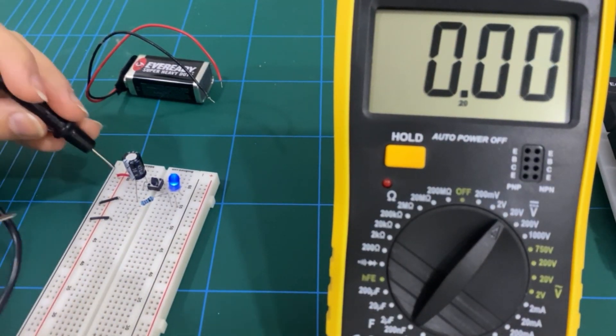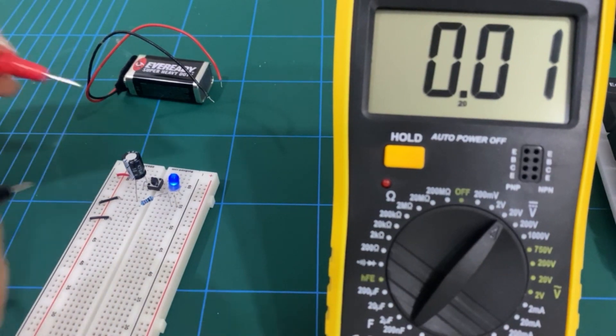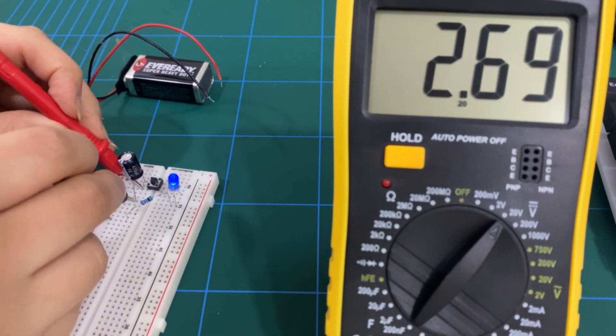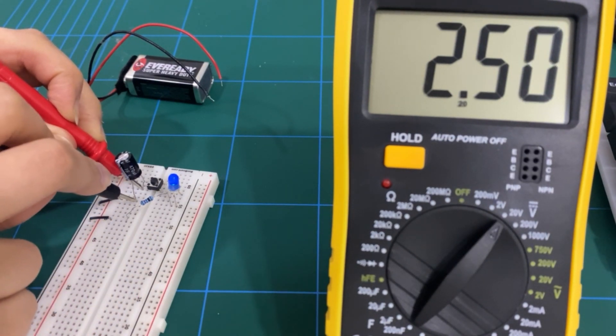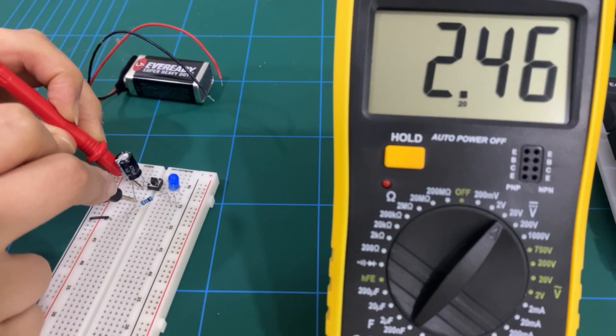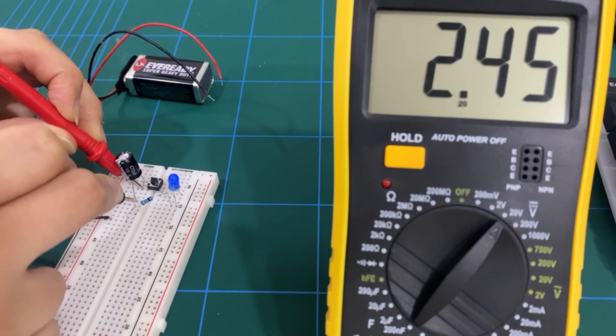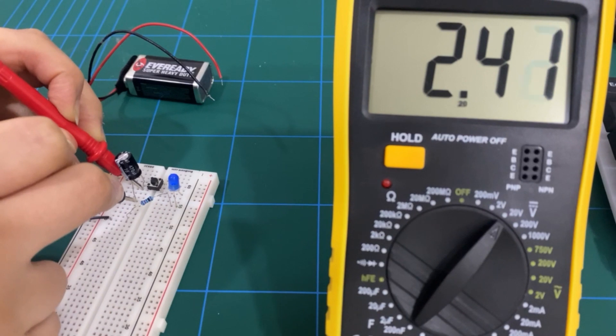And if we observe the charge across the capacitor, we can see that it has discharged through the LED. So in comparison to what the LED looked like when we first connected it, it was very bright. And we can see that it slowly dims as the capacitor discharges through the other path that we've created for it.